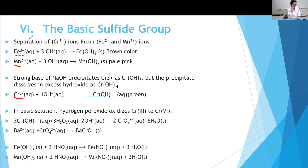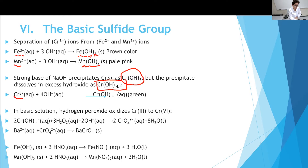In the first step, we selectively precipitate iron and manganese using sodium hydroxide. When you add sodium hydroxide, iron precipitates as ferric hydroxide Fe(OH)₃ with a brown color, and manganese precipitates as Mn(OH)₂. For chromium, because we use an excess amount of hydroxide, instead of precipitating it forms a soluble CrO₄²⁻ complex, which is green and remains in aqueous solution.